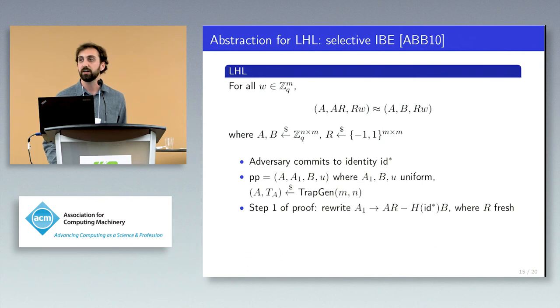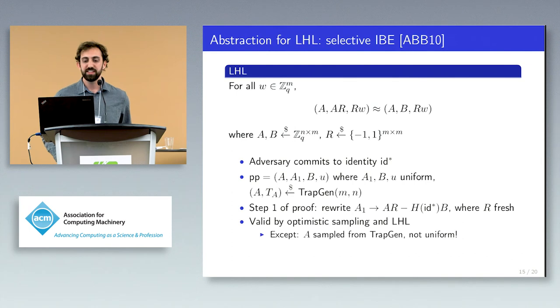While I cannot go through the entire security definition or proof for this scheme, what I will say is that the first step of the proof is to rewrite this uniform A1 from the public parameter into A times R minus H of ID star times B, where H is a publicly known function of identities to matrices. This has the effect of embedding the challenge identity into the ciphertext, which will allow us to prove the scheme secure. This transformation is cryptographically valid by reasoning in terms of the leftover hash lemma and optimistic sampling.